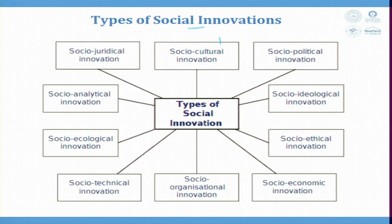Many times, you will not have exclusively one type — there will be a blend of many. For example, you will have socio-cultural innovation attached with socio-ethical innovation, attached with socio-juridical innovation. These three can be together to develop a solution. Similarly, political, ethical, organizational and analytical innovation can be part of one. So they are clearly distinct, but they will have a combination together to come to an innovative solution.